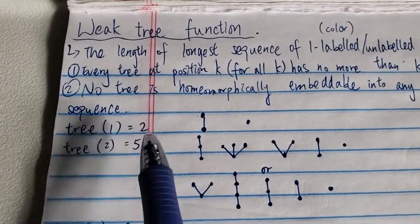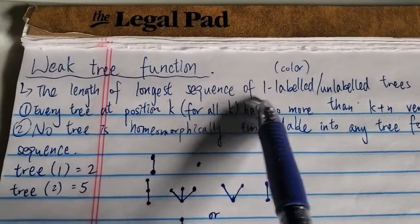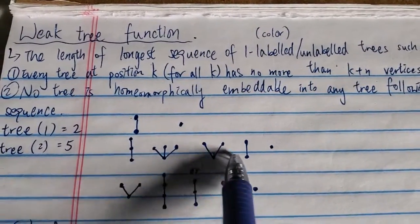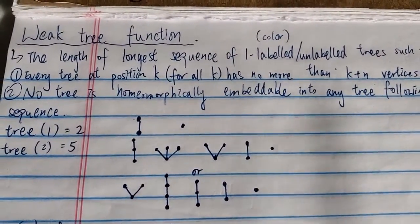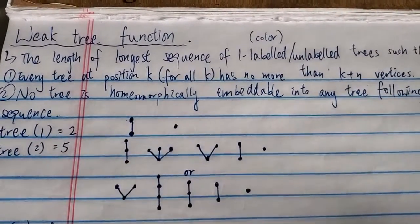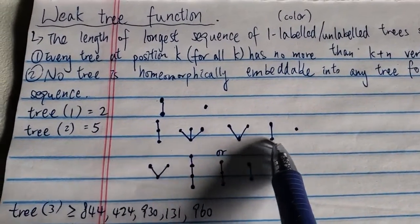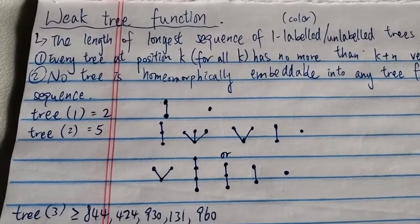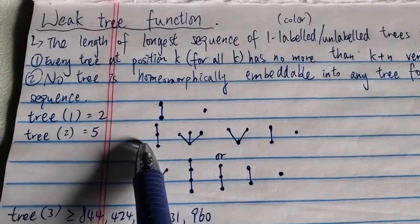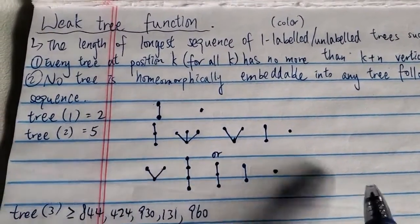Now let's look at tree two, which equals five. The trees are uncolored, so you don't have to worry about blue, green, or red — they're just one color, or unlabeled, which means uncolored. There are many versions you can play, but again we are looking for the longest game. There are two solutions that achieve the longest game of five.